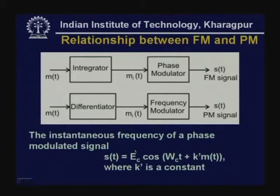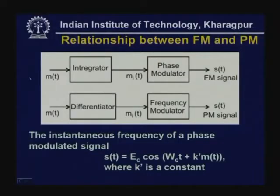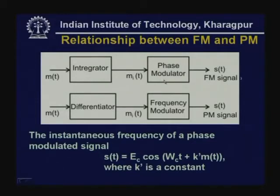One interesting observation is that AM, FM, and PM are very closely related. If the modulating signal M(t) is first integrated and then passed through a phase modulator, we get a frequency modulated signal. On the other hand, if the modulating signal is passed through a differentiator and then frequency modulation is applied, we get a phase modulated signal. So a frequency modulated signal can be obtained using a phase modulator after integrating the modulating signal, and vice versa.